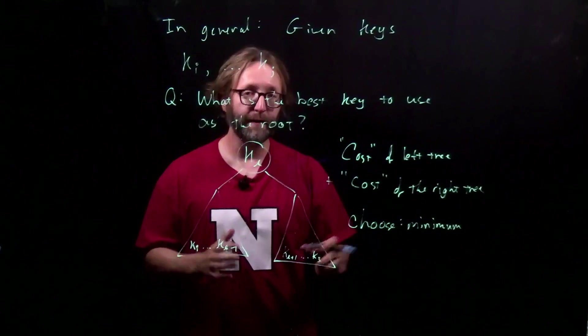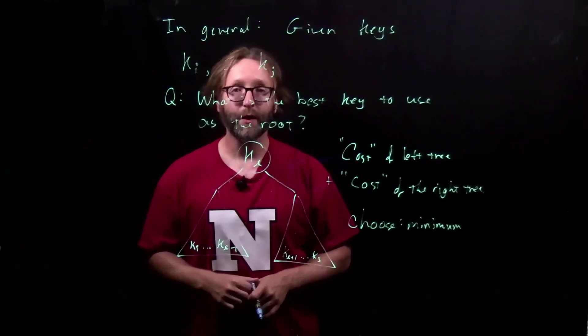Now if we can come up with a recurrence that captures these two, say the cost of the left subtree, plus the cost of the right tree, and we can consider the sum of these costs for each of our possible choices, then we choose the minimum. In the next part, we'll go ahead and define that recurrence, as well as the base cases.